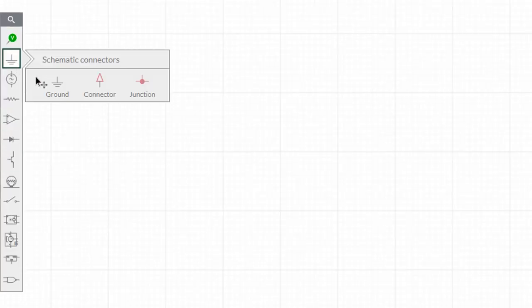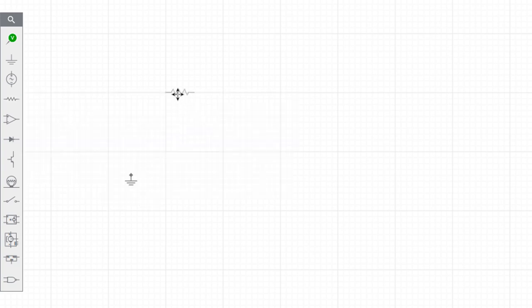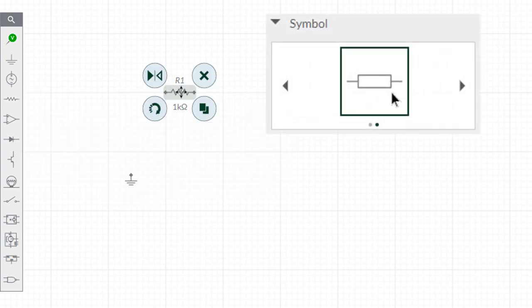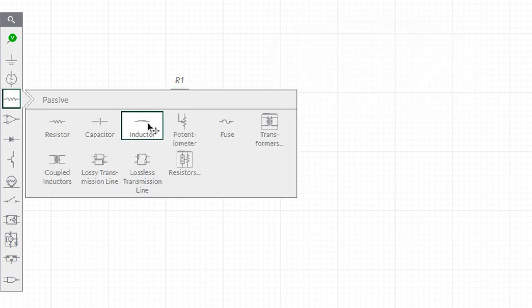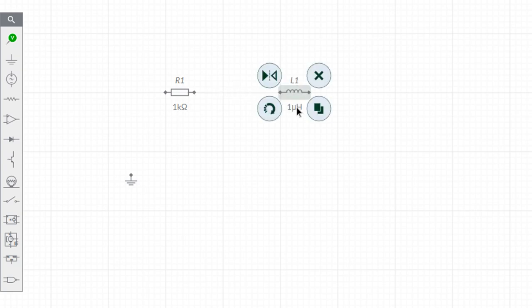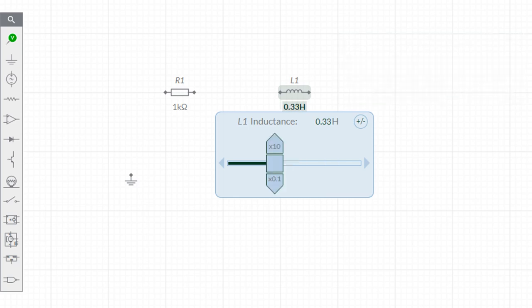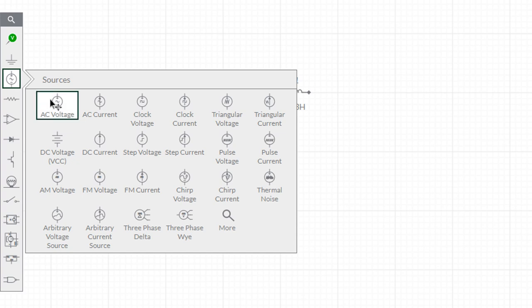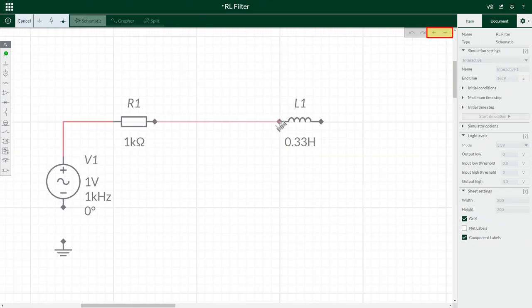So grab yourself a ground and place it. Get a resistor, place it, and if you double click a component you can change its symbol, and you can also change the values with the slider or the config pane by clicking on the cog. Get an AC voltage or a signal generator sine wave generator. The zoom buttons are at the top right. Complete your circuit.